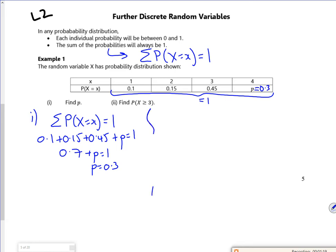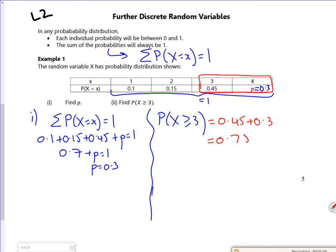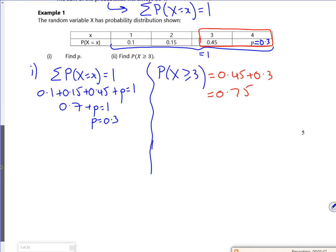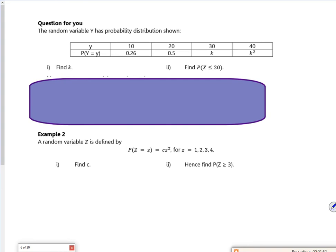And then for the probability that x is greater than or equal to 3, that's the 0.45 plus the 0.3, so it's 0.75. And they're quite nice these questions, not much work.